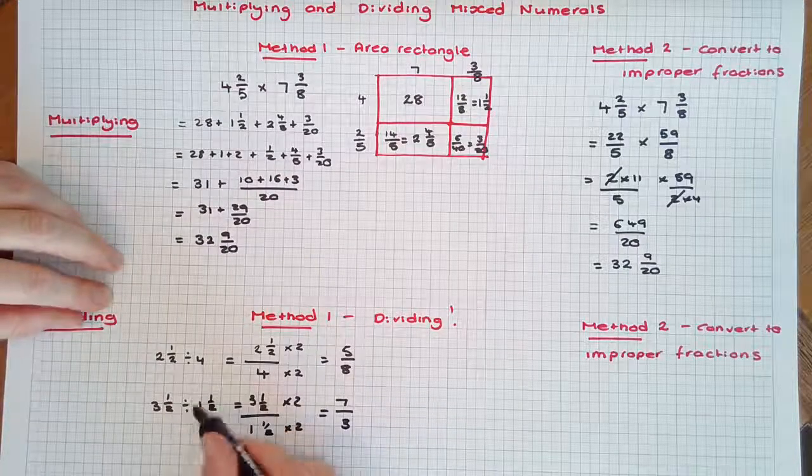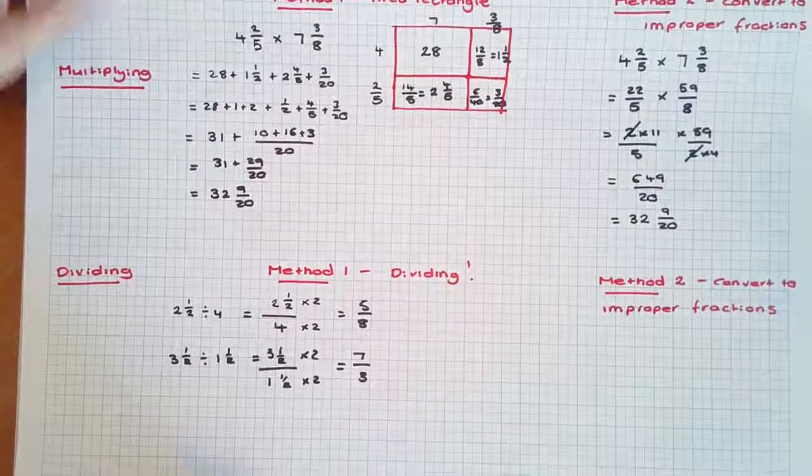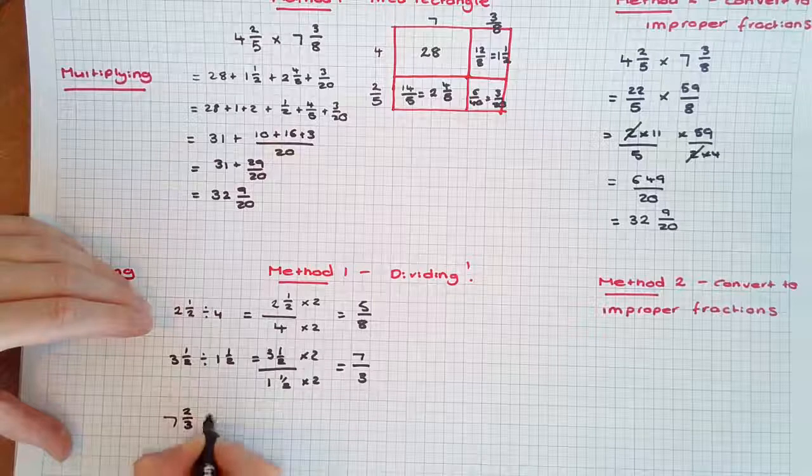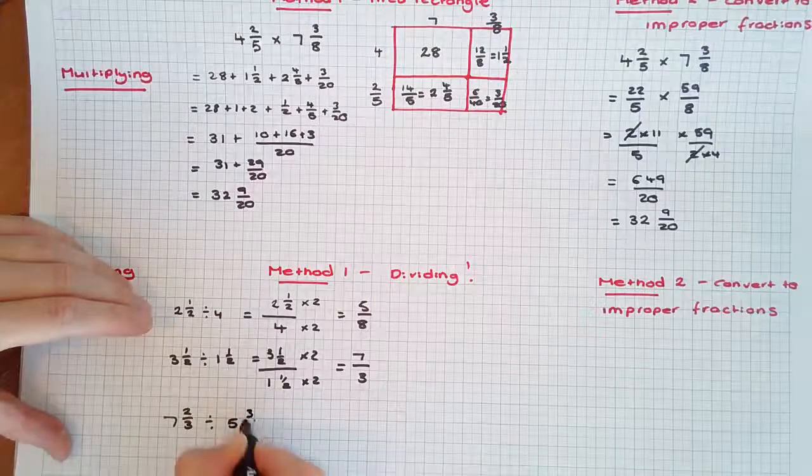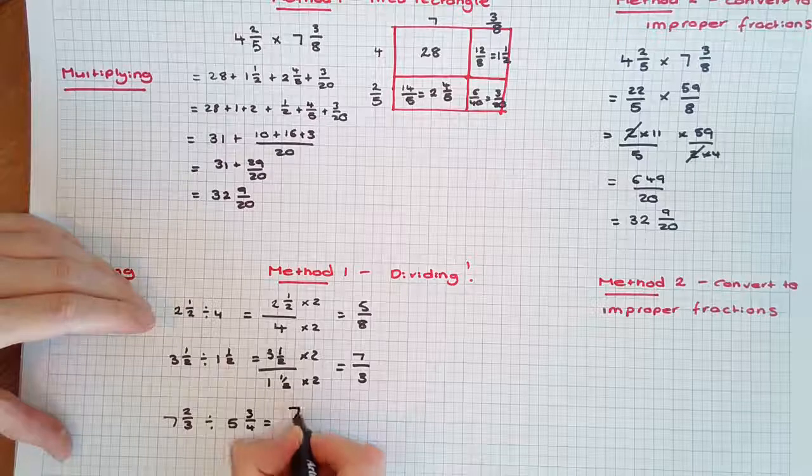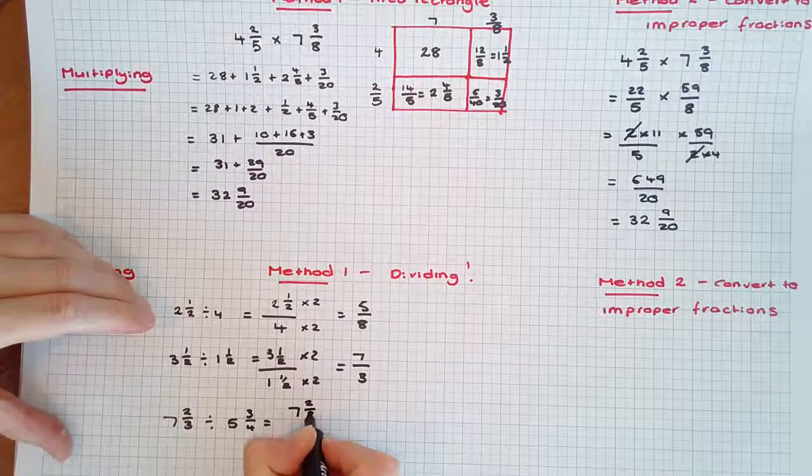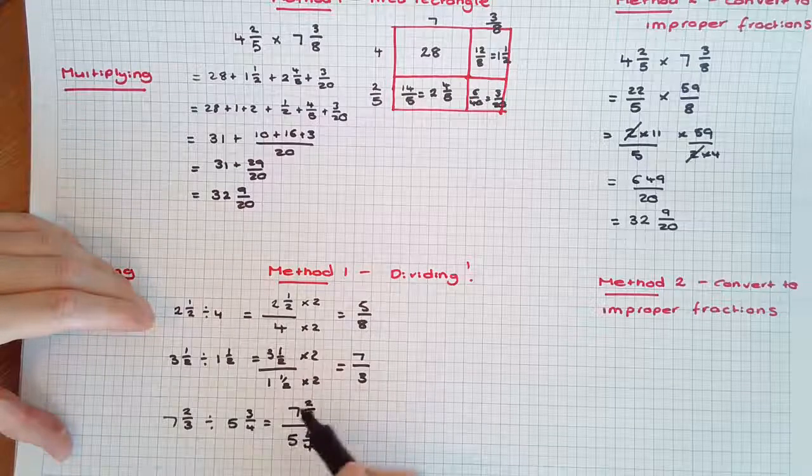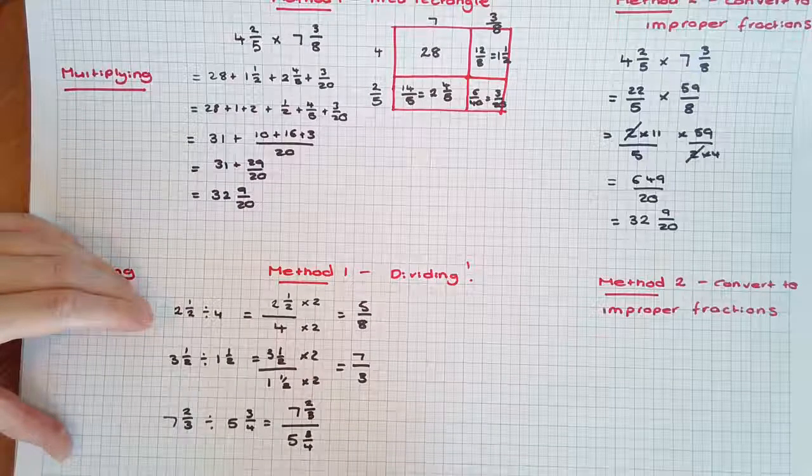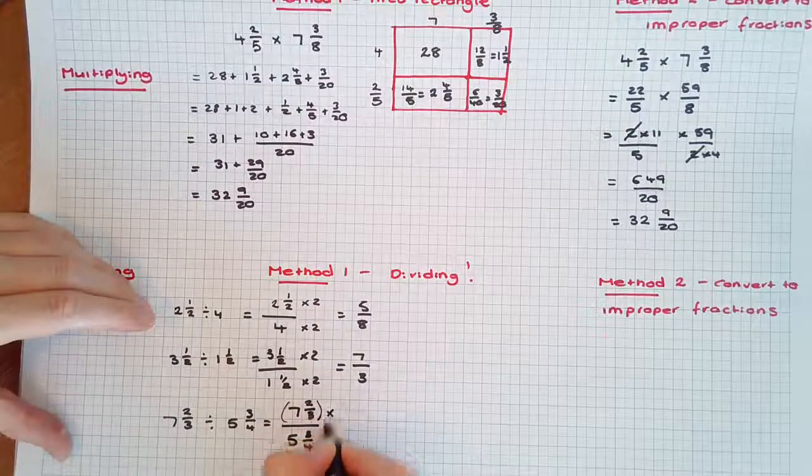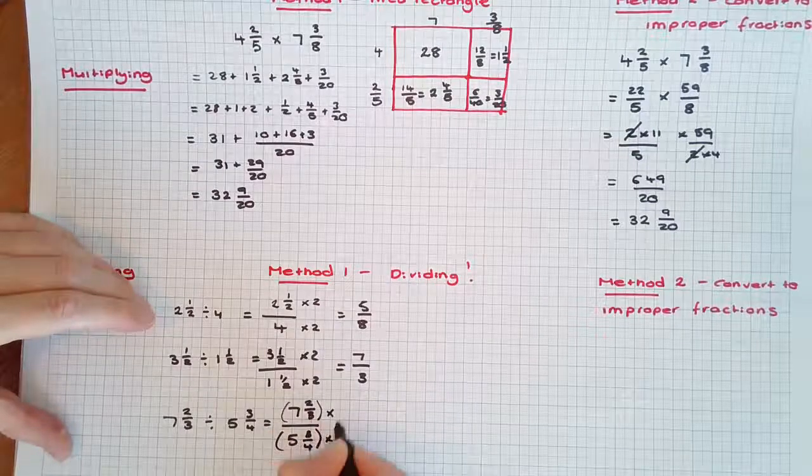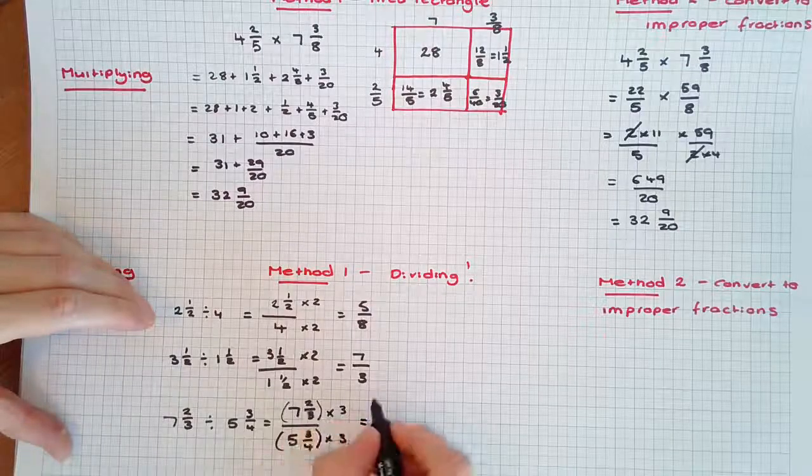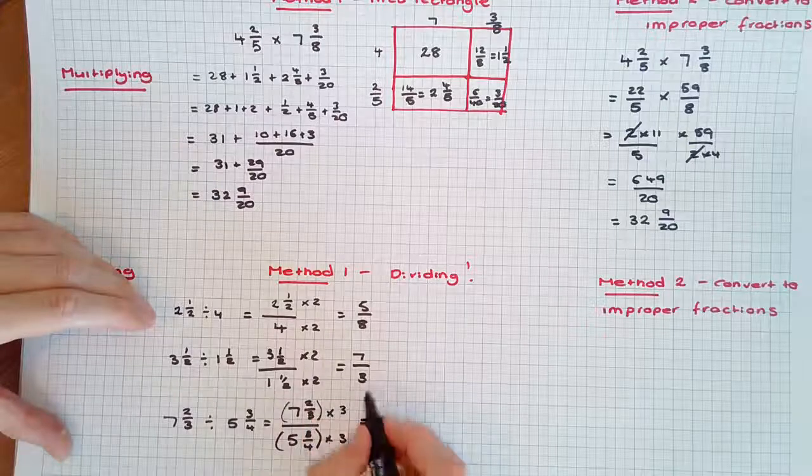Now let's look at 7 2/3 divided by 5 3/4. Again, we'll set it up as a fraction: 7 2/3 over 5 3/4. Now to get rid of the fraction in the numerator, we need to times by 3. Whatever we do to the numerator, we must do to the denominator. We're left with 7 times 3, that's 21, and then we have the 2. So I'm going to put a plus sign in here to do this separately: 7 times 3 is 21 plus 2. And now we've got 5 plus 3/4, and they're both being multiplied by 3.